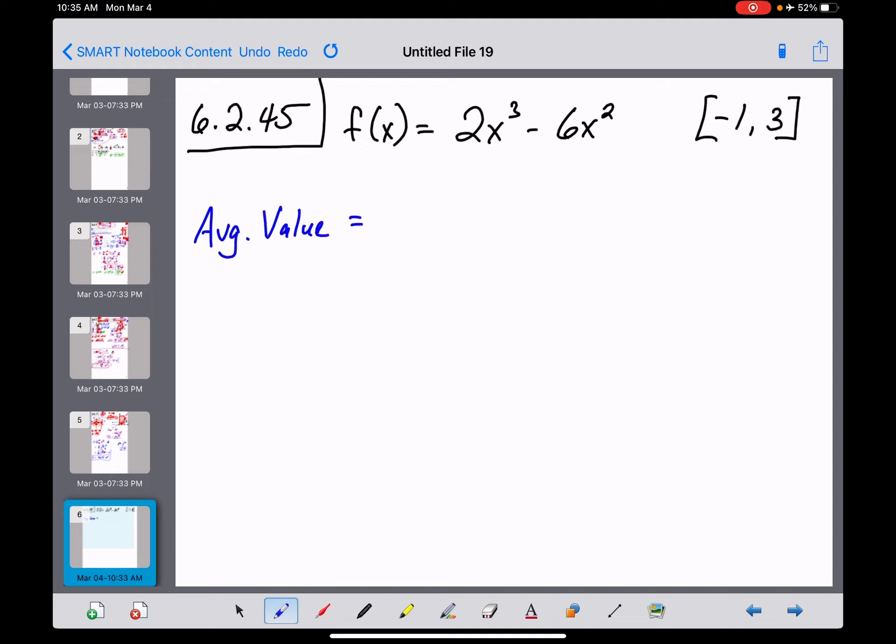So the average value formula is 1 over b minus a times the definite integral from a to b of whatever function it is that we're taking the average value of. Now just to refresh your memory, what you're finding right here is the area underneath the curve. b minus a gives you the width of that interval. So you're really taking area divided by width and that gets you the average height of your function.